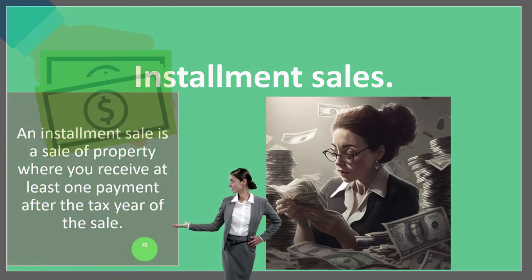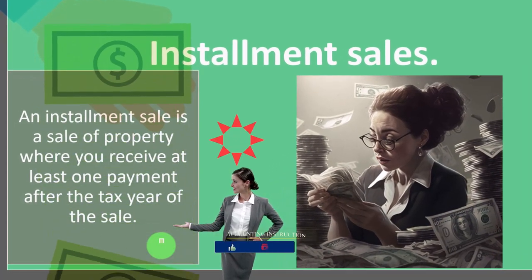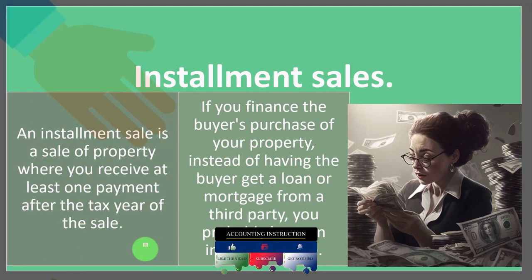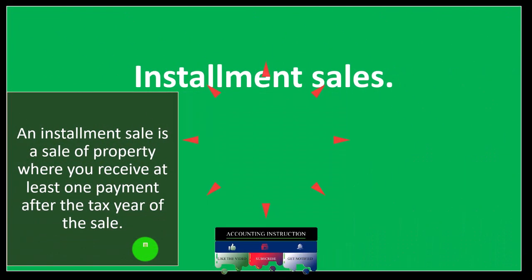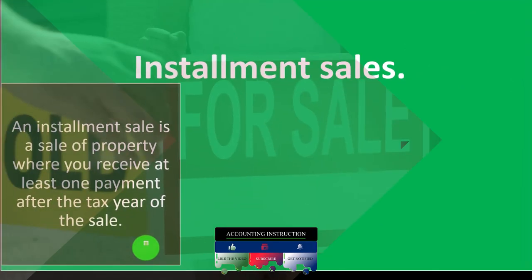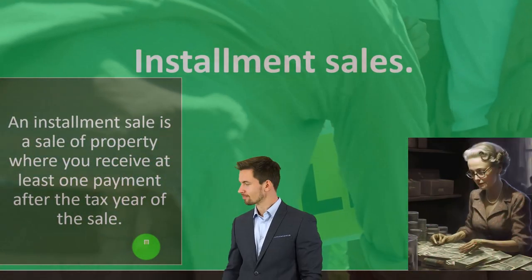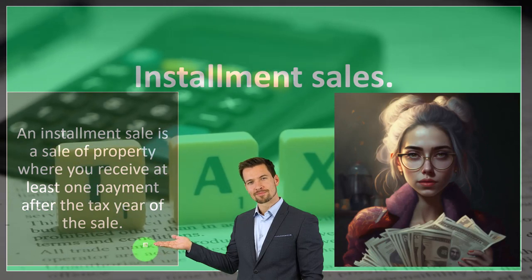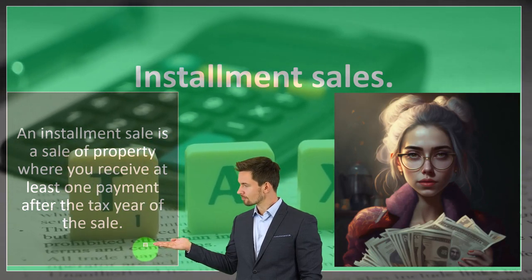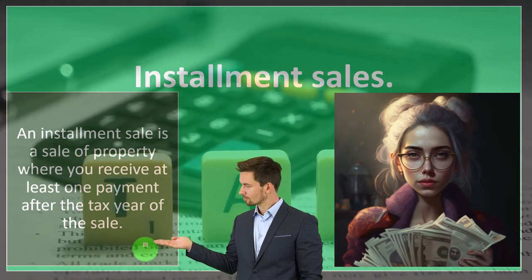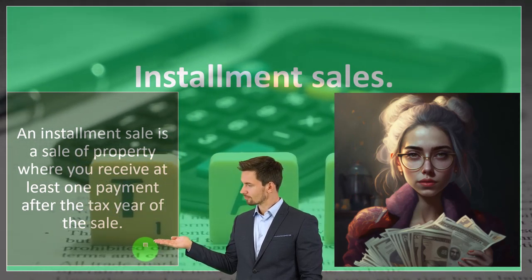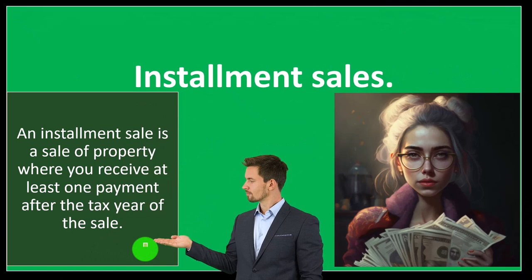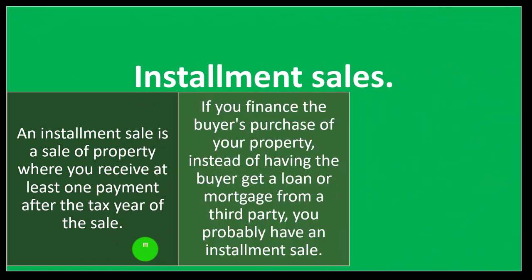An installment sale is a sale of property where you receive at least one payment after the tax year of the sale. You made the sale, but you're getting paid after the sale. If I sold something, you would think I would recognize the revenue at the point of sale. But if I'm not going to get the money until some future point in accordance with our payment arrangement, I might not have the money to pay the taxes — which is part of the rationale for installment sale treatment.